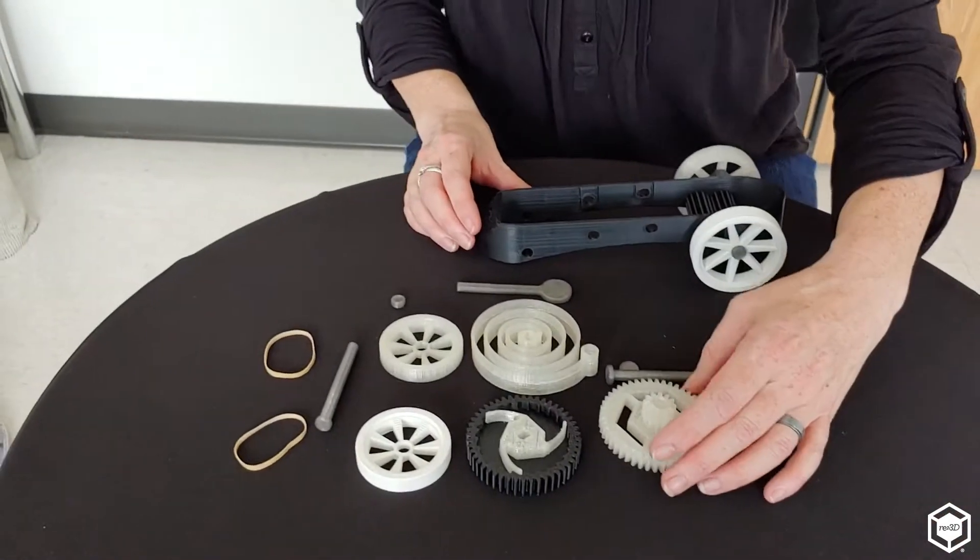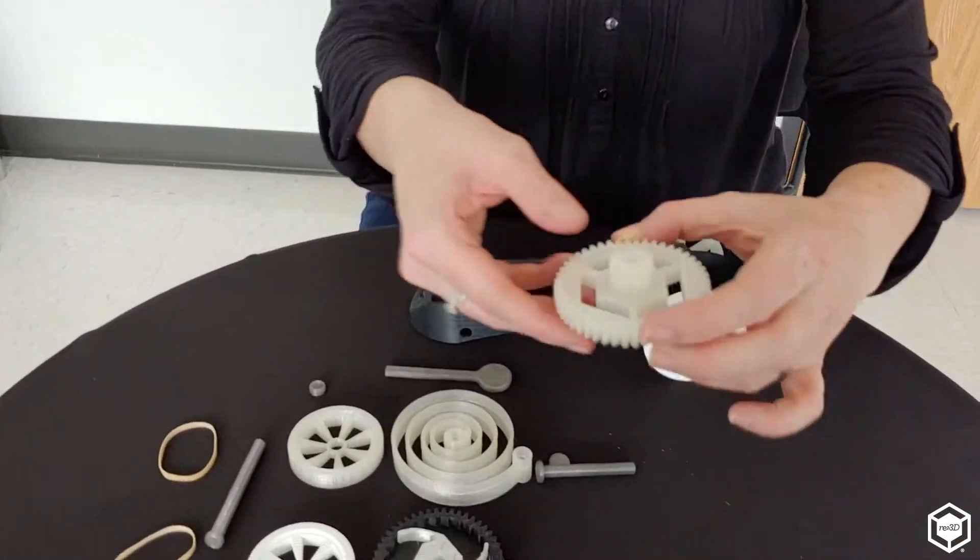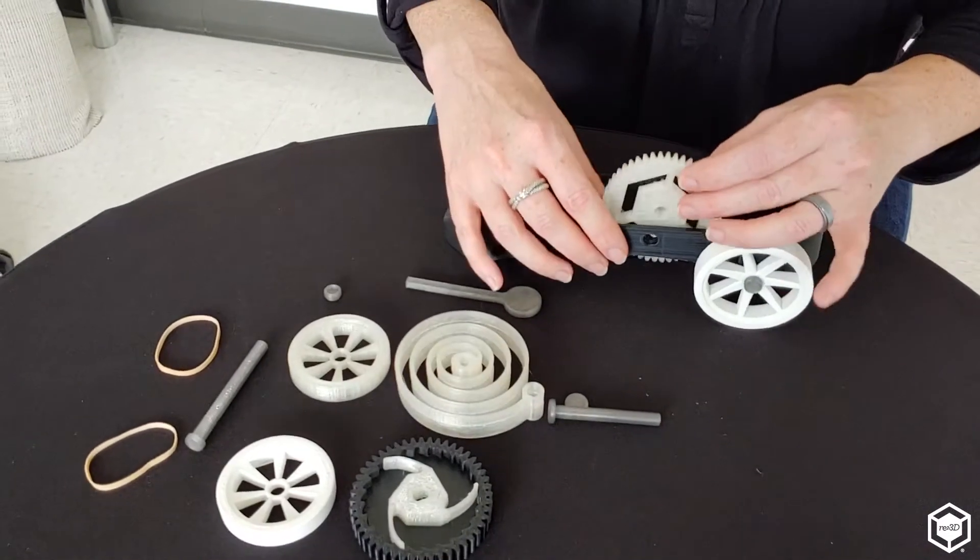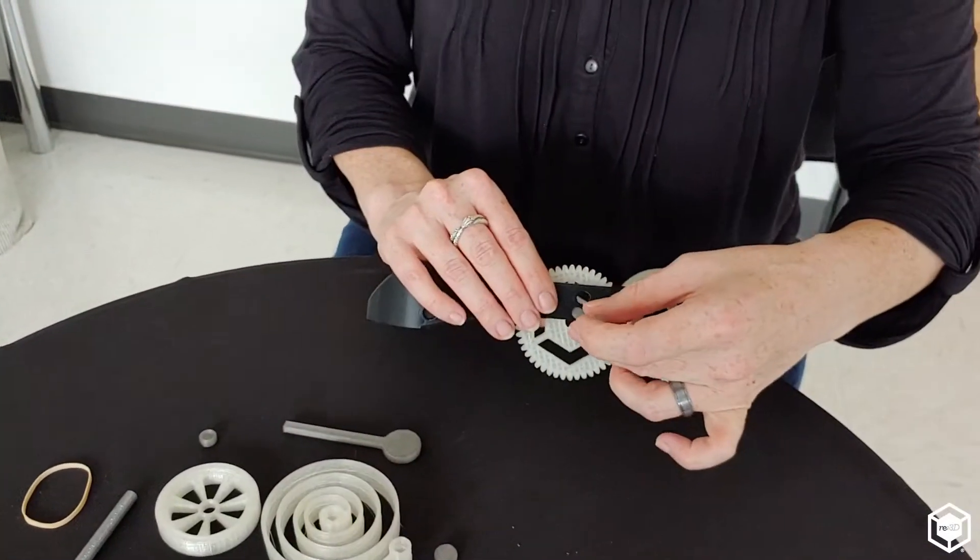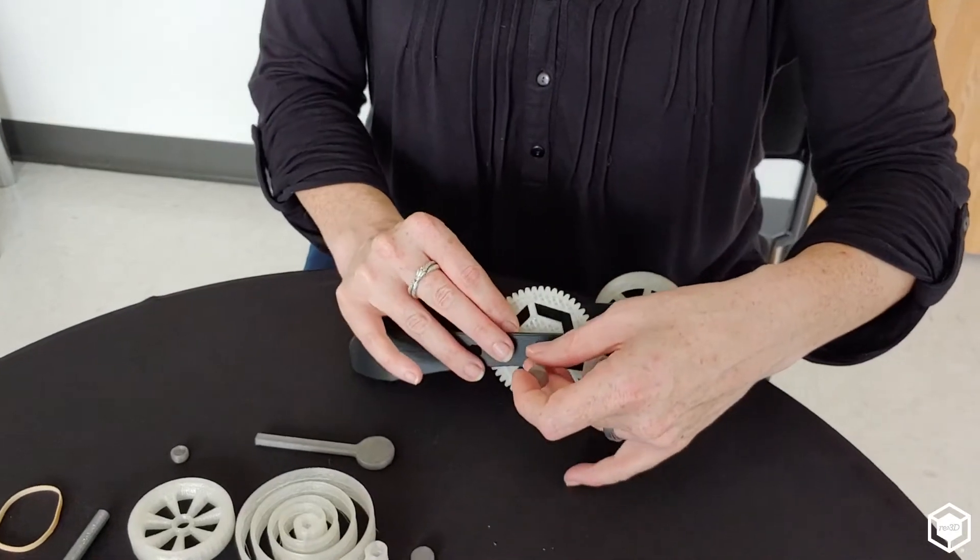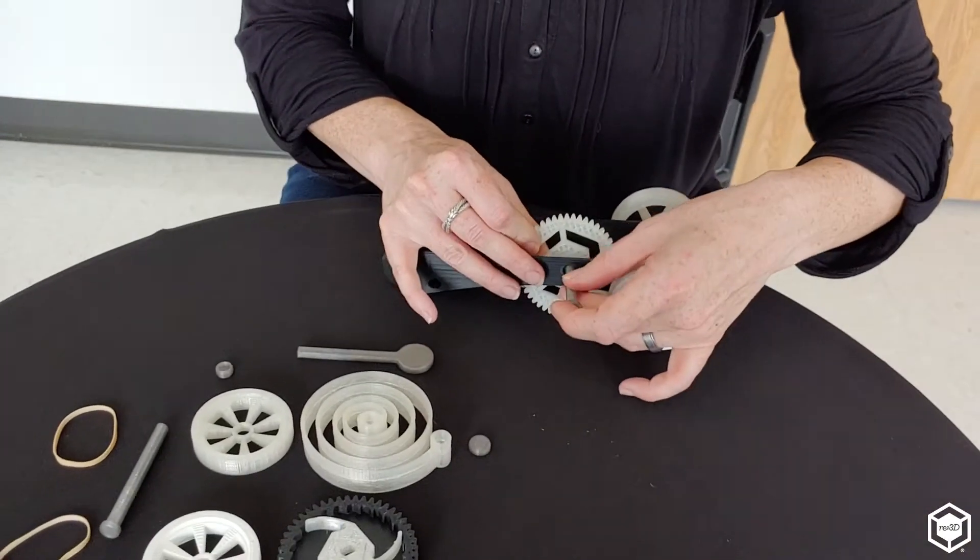Next we're going to move on to the gear system. We're going to take this gear. Make sure the small side is facing me. Take this stick and push it through the hole. Not all the way through.